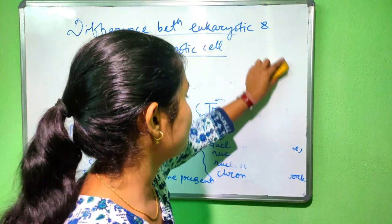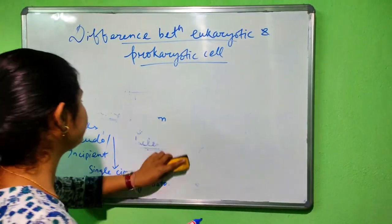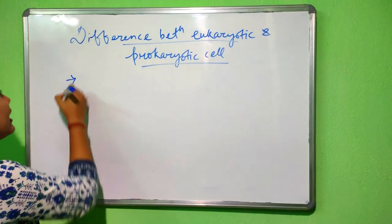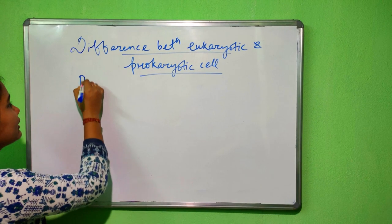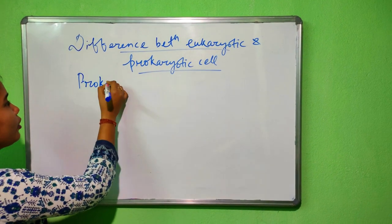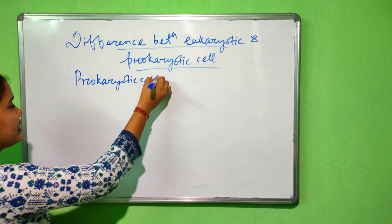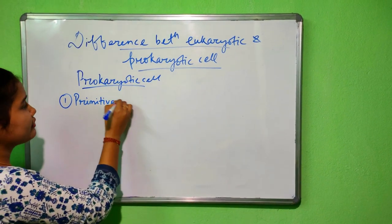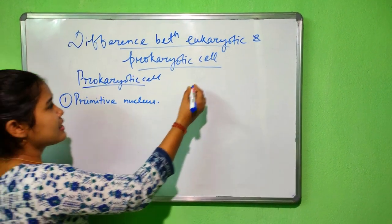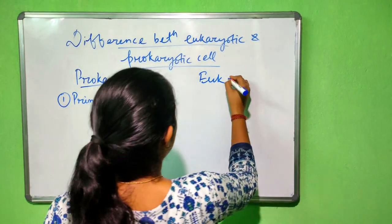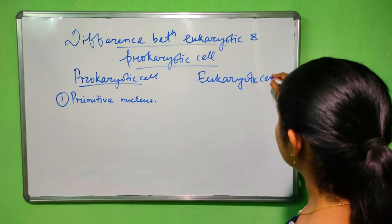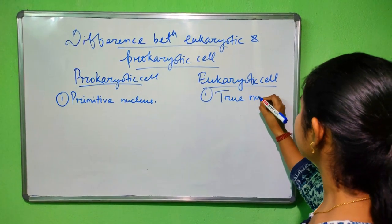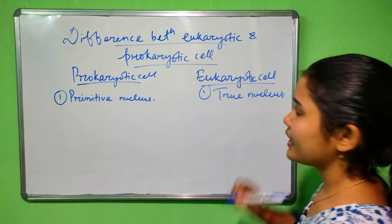Now let us differentiate between eukaryotes and prokaryotes. The first point of difference is the definition. The prokaryotic cell contains a primitive nucleus, whereas the eukaryotic cell contains a true or well-organized nucleus.